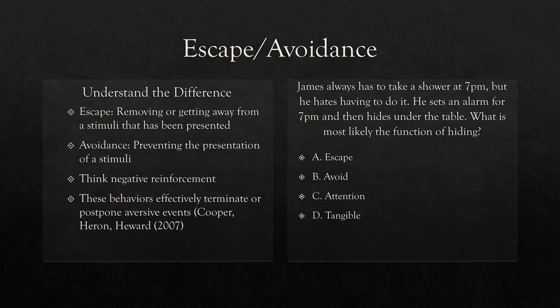Always think negative reinforcement — negative reinforcement is associated with escape avoidance. If I'm removing something and that's leading to an increase in behavior, it's negative reinforcement. Cooper, Heron, and Hewitt — our white book — says these behaviors effectively terminate or postpone aversive events. Termination would be escape; postponement would be avoidance.